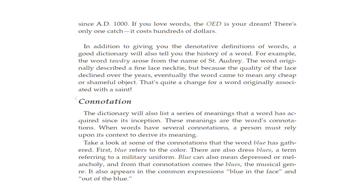In addition to giving you the denotative definitions of words, a good dictionary will also tell you the history of a word. For example, the word 'tawdry' arose from the name of Saint Audrey. The word originally described a fine lace necklace, but because the quality of the lace declined over the years, eventually the word came to mean any cheap or shameful object — quite a change for a word originally associated with a saint.